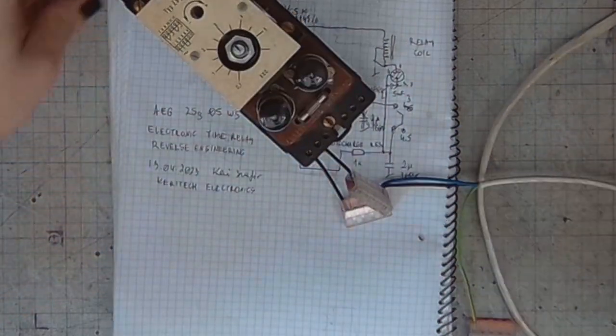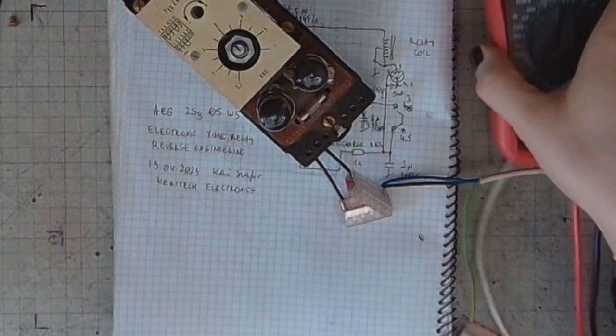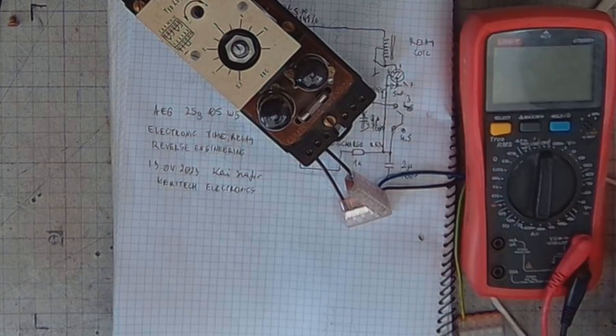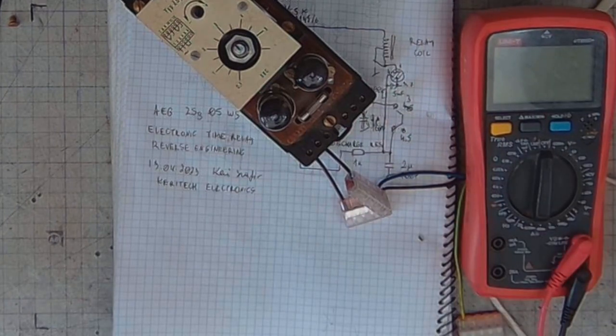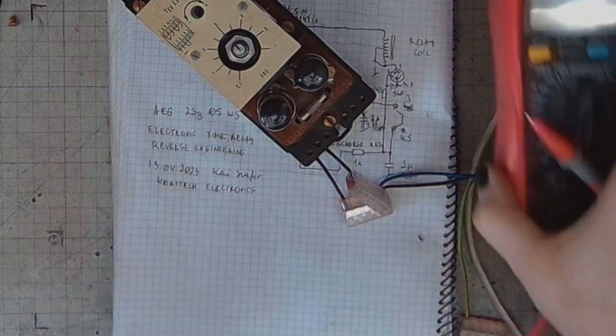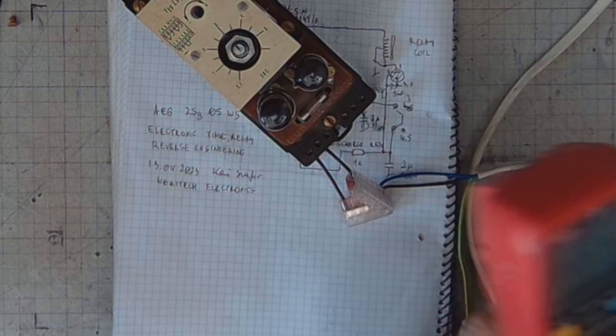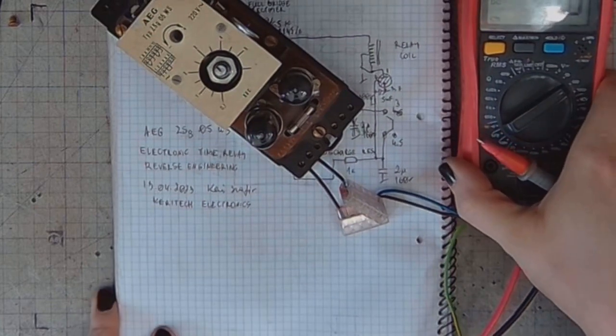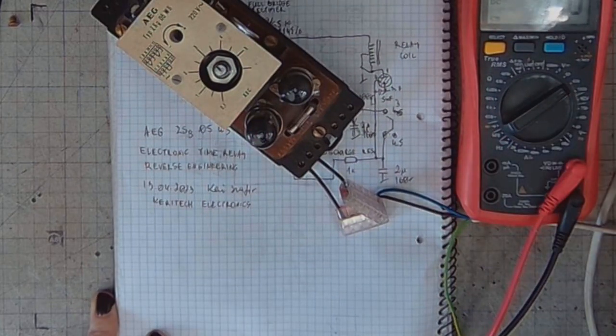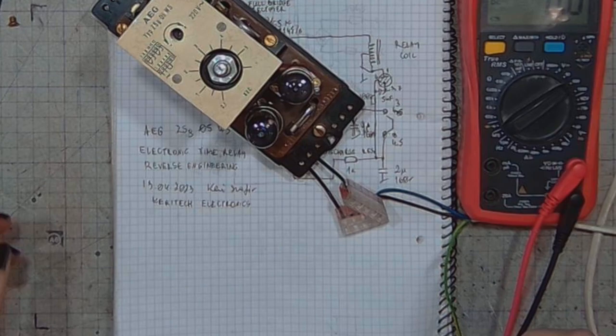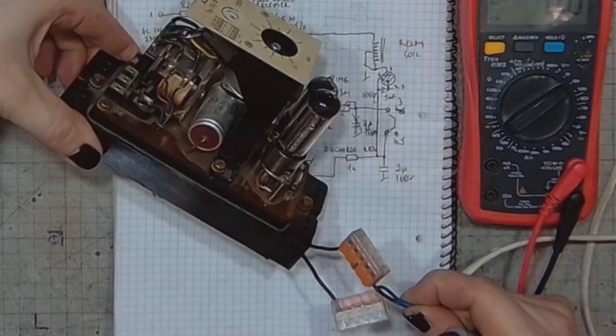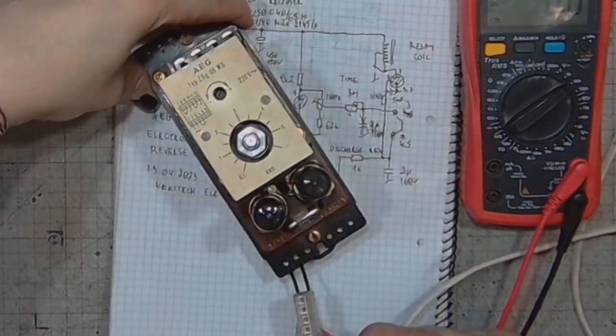So now I will measure the voltage on the voltage regulator tube. Watch your eyes, please. The light is coming back. I have to be quick.